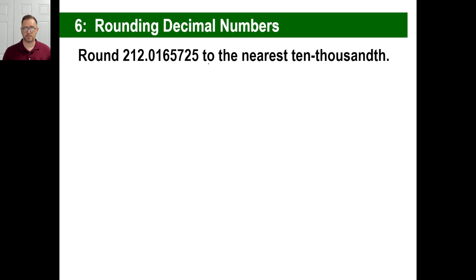Last thing we're going to do is round decimal numbers. We're going to round this to the nearest ten-thousandth, which means we're going to have to count off and figure out which one's the ten-thousandth. So we know it's going to be this part right here, 212 point something. Tenth, hundredth, thousandth, and then ten-thousandth. So that's the number we need to figure out which one is what.